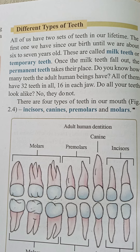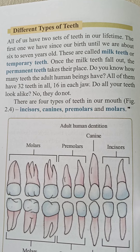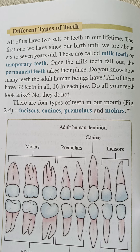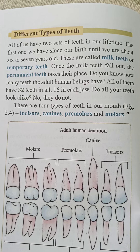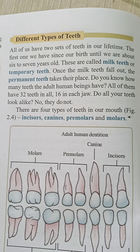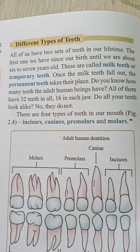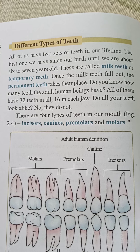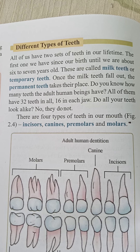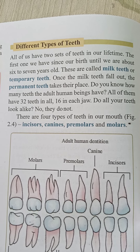All of us have two sets of teeth in our lifetime. The first set we have from birth until we are about six to seven years old. These are called milk teeth and temporary teeth. Once milk teeth fall out, the permanent teeth take their place.